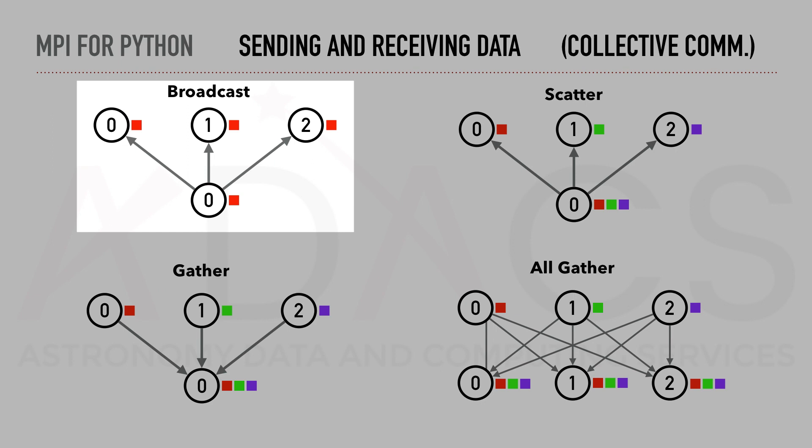The first pattern of interest is broadcasting. This is the case where one process will send a message to every other process inside the communicator.